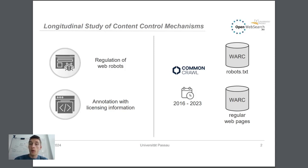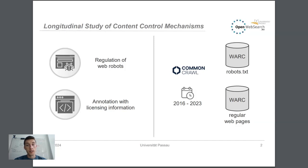In our study we parse eight annual crawl dumps from Common Crawl in order to gain better insights into the prevalence of such mechanisms as well as to better understand how well they are adopted in the practitioners community. The crawl dumps which we analyze were collected between 2016 and 2023 and contain both robots.txt files as well as regular web pages.